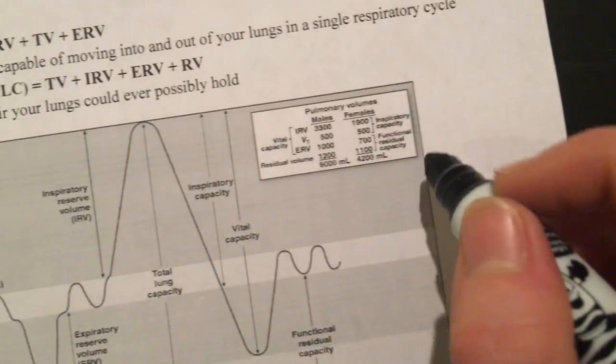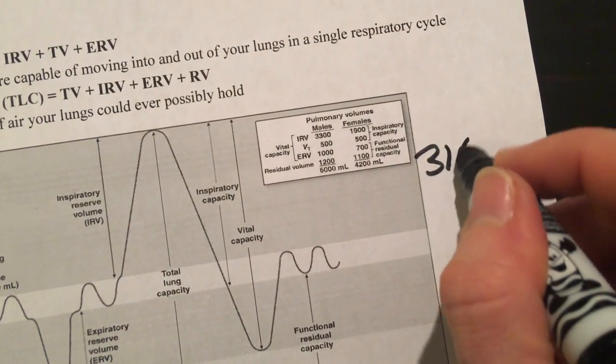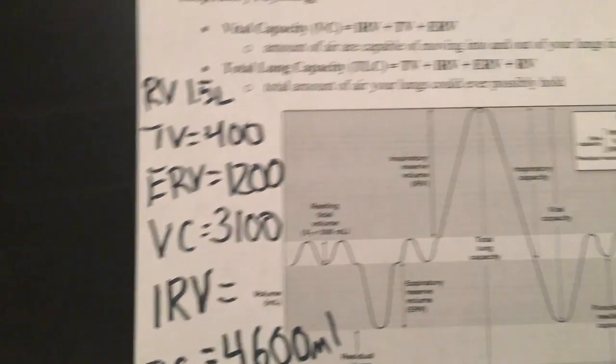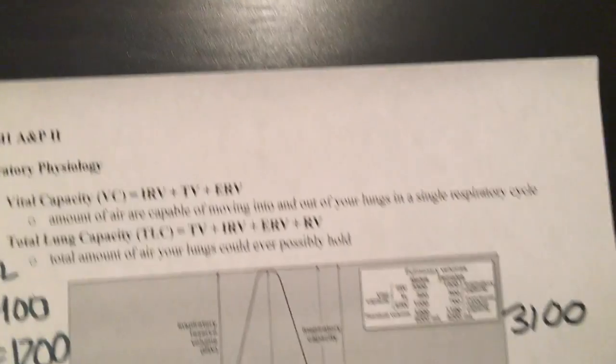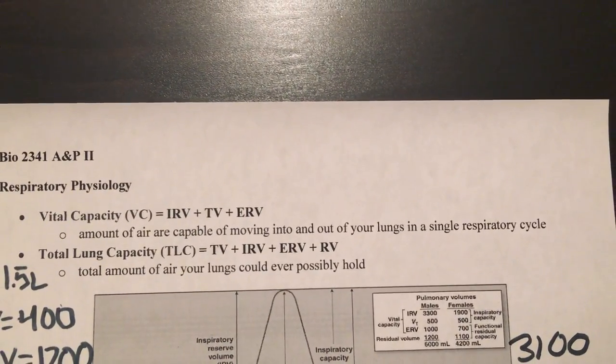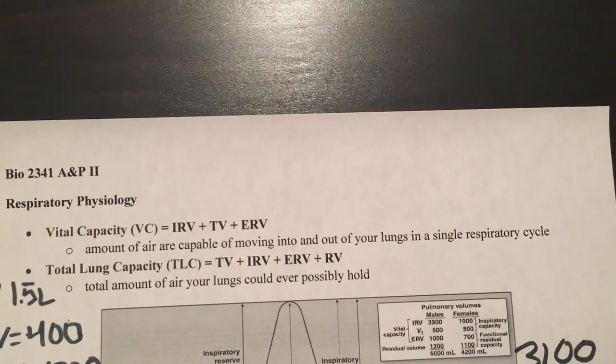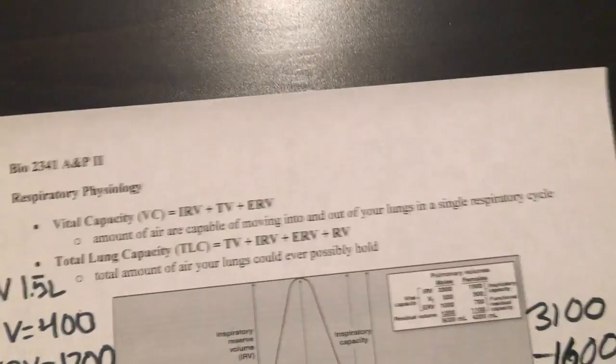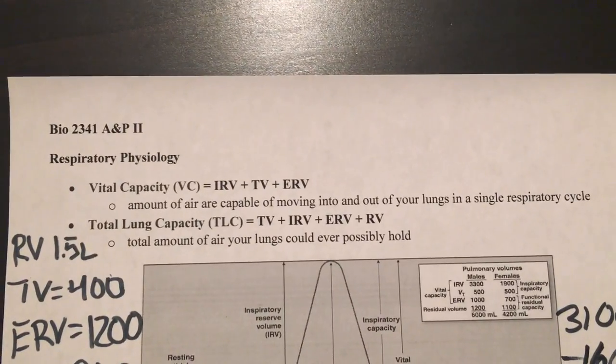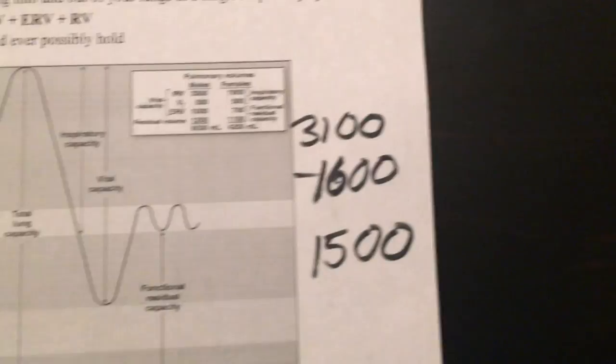So that would be, let me go over here and do the math. Should have brought my calculator. Okay, so that was our vital capacity minus 1600. I believe that's 1500. I'll just do it in my head really quickly, yes. So this is our IRV.